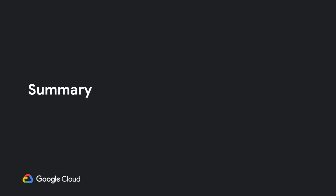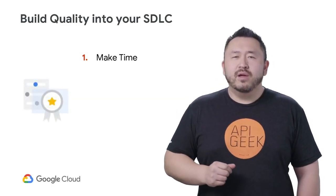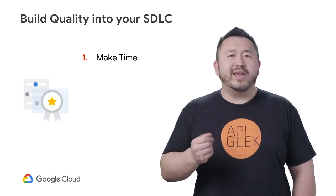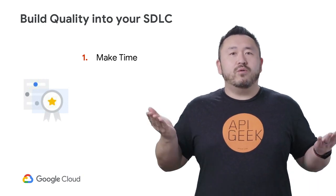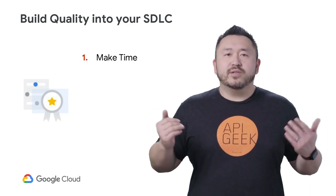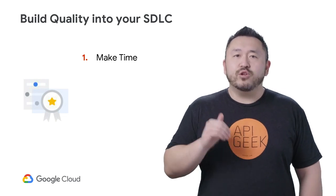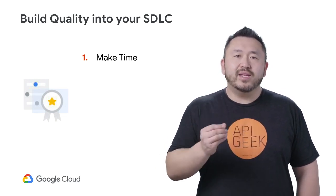Let's summarize everything with a few key strategies to build quality into your SDLC. The first is to make time to test. Unfortunately, some teams often look to QA as an afterthought — only when something breaks do the questions about quality assurance come up. Have dedicated time and QA roles embedded in your daily routine to test your APIs and validate quality.